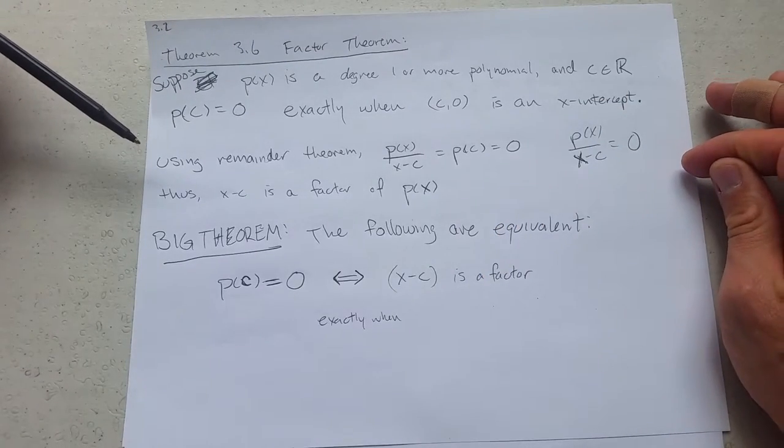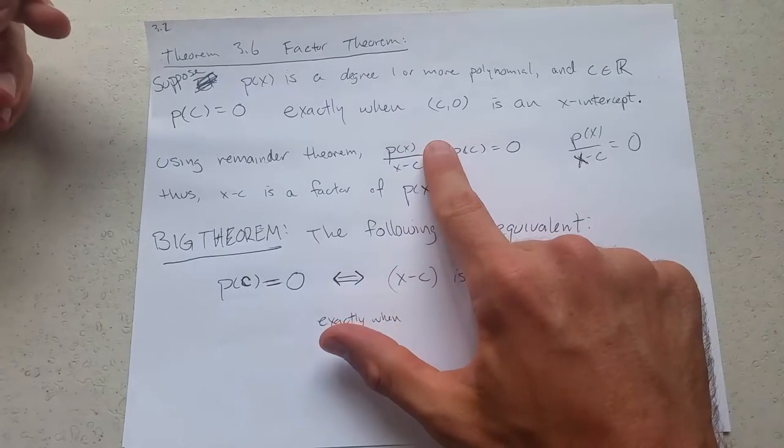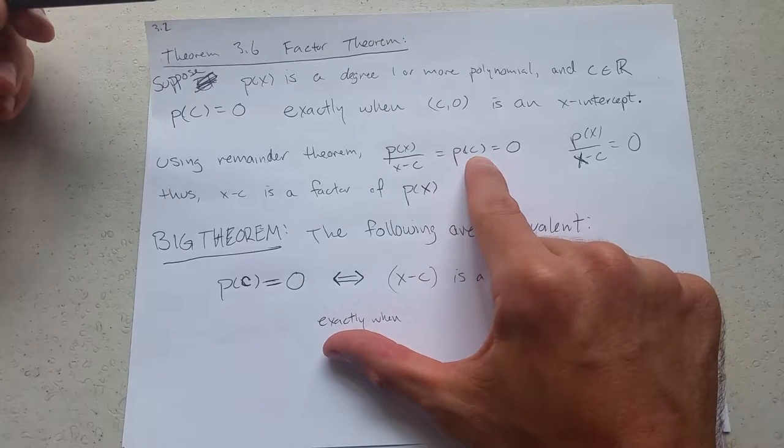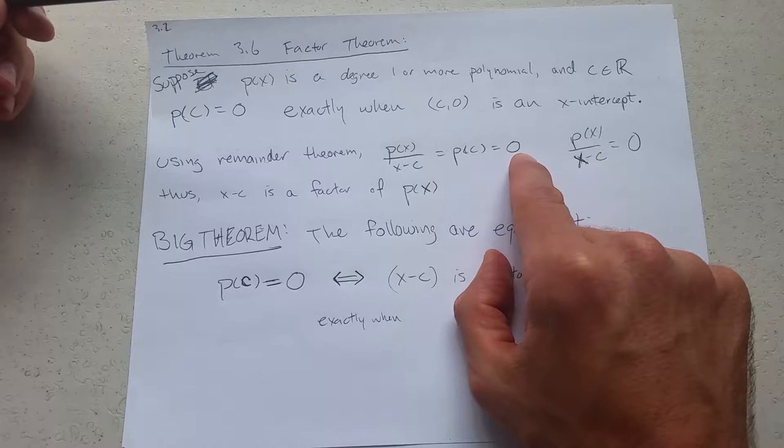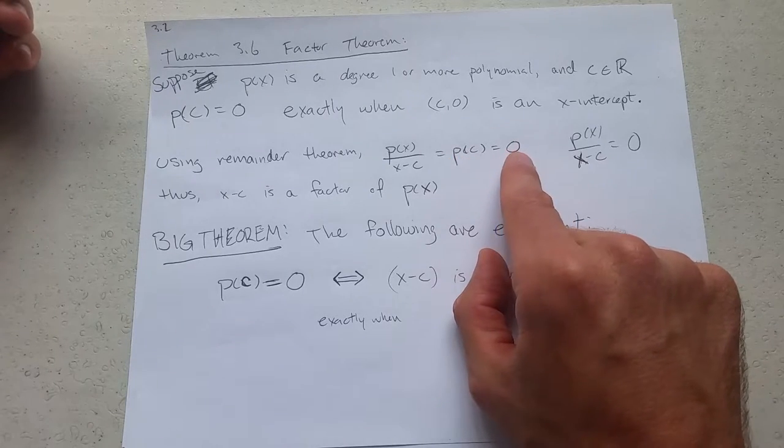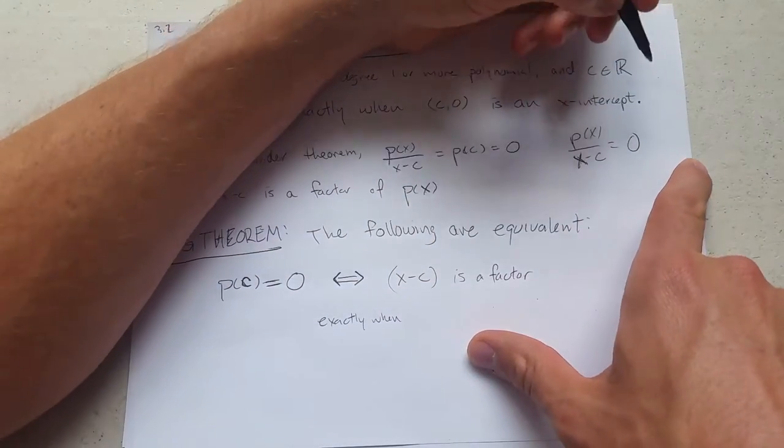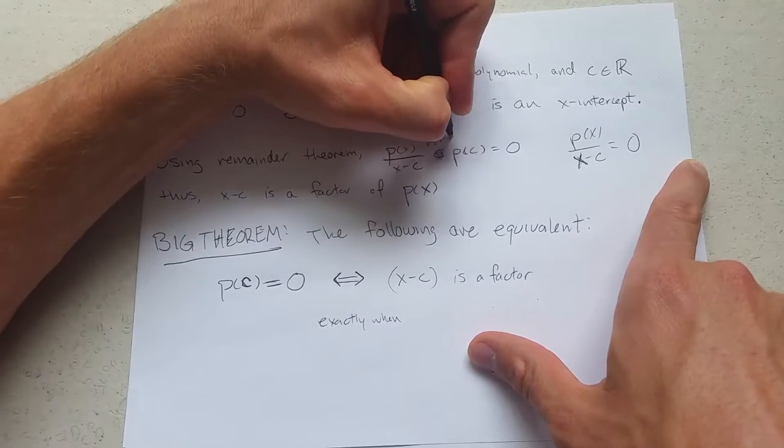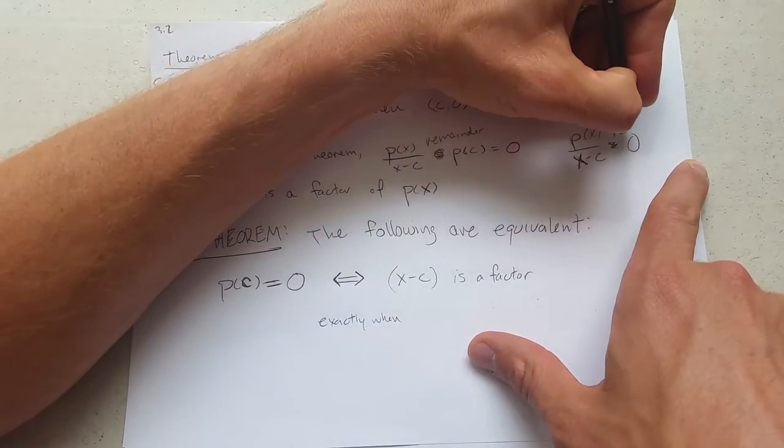There's a remainder theorem and what that tells us is p of x divided by x minus c equals p of c. If we know p of c is already zero, what this tells us is, and this is the remainder, it tells us the remainder is zero. So I shouldn't write equals zero. This should be remainder. So this has remainder zero.